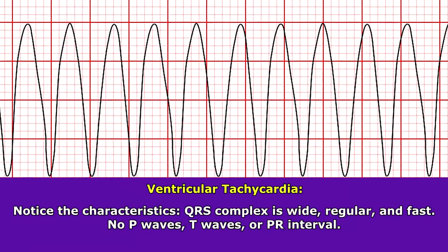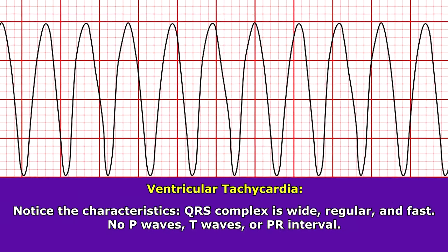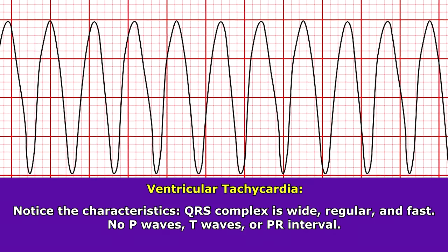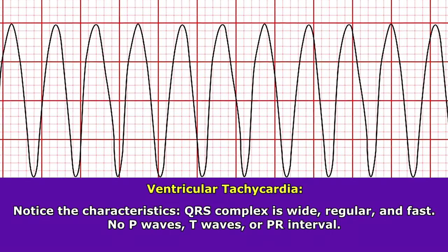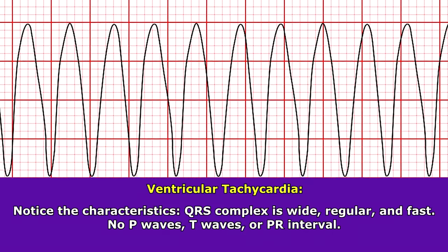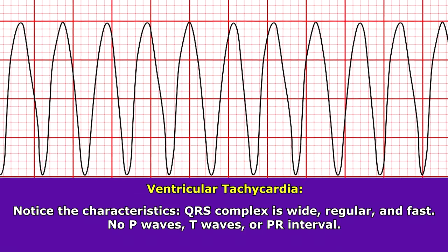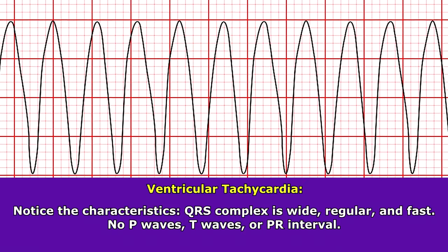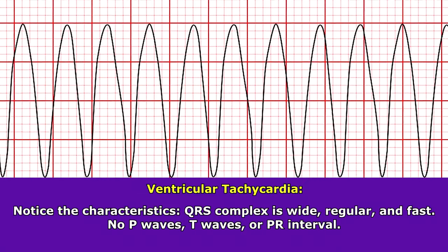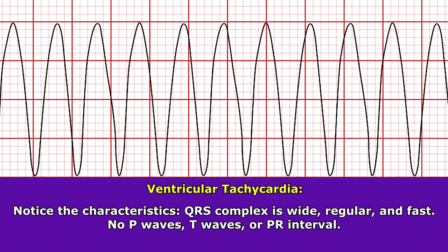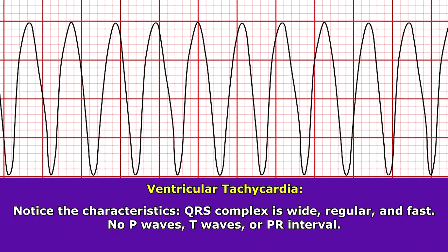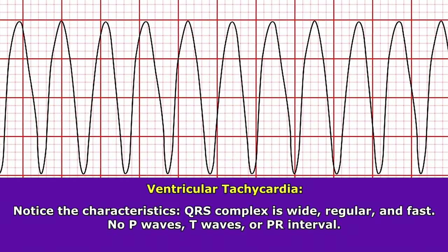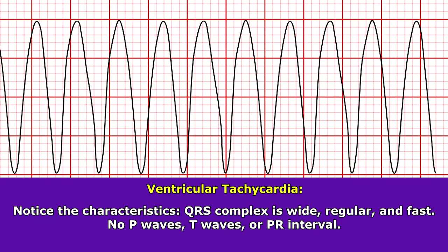And as you can see here in this rhythm, what really catches your eye is this bizarre looking QRS complex. It's very wide, it's regular, and you can see that it's very fast. You can't really see any P waves, no PR intervals or T waves. And here, this is a classic example of ventricular tachycardia.